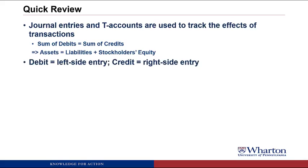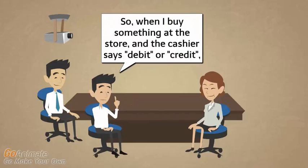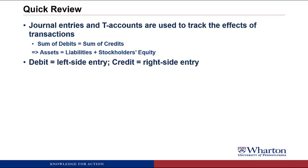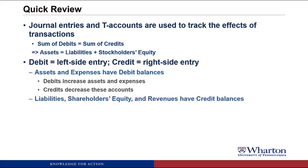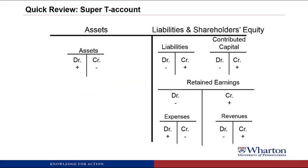We talked about how debit means left side entry and credit means right side entry. When you're at the store and the cashier says debit or credit, he is really asking left or right. To make sure that debits and credits will preserve the balance sheet equation, we set assets and expenses to have debit balances, which means that debits will increase these types of accounts and credits will decrease them. We also looked at a visual picture called the Super T-account, which shows whether debits or credits increase or decrease the various types of accounts.